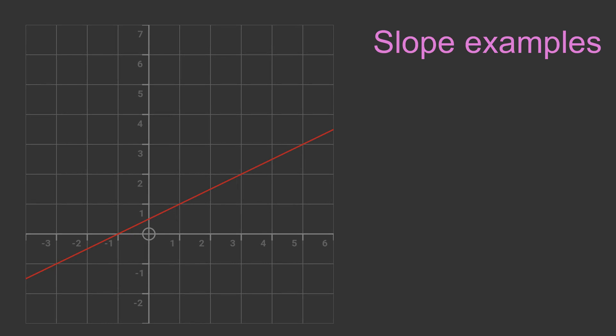Here are some examples showing the slope of various straight lines. This line has a slope of 0.5. The slope is positive. This means Y increases as X increases, so the line slopes upwards from left to right.